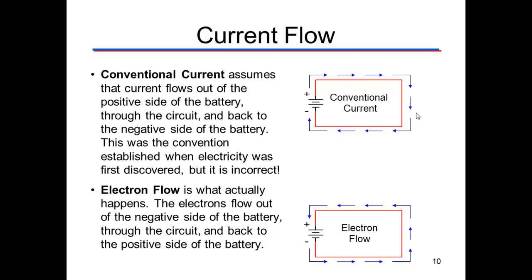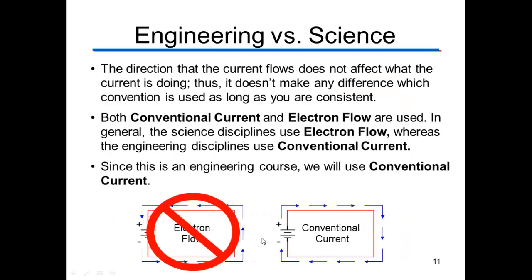Conventional current flow says that current flows out of the positive terminal. But because we know what actually happens is the flow of electrons, which are negatively charged, it actually flows out of the negative terminal of the battery. When looking at a schematic, the negative terminal is the short side of the representation.